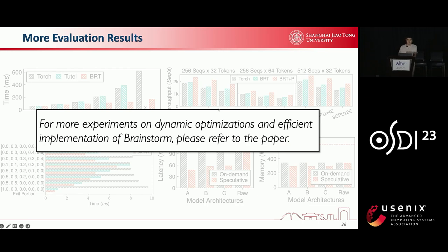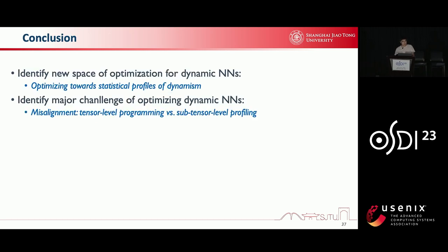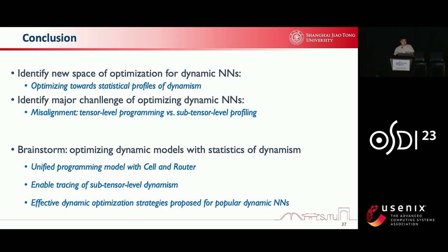For more experiments on dynamic optimization and efficient implementations of Brainstorm, please refer to our paper. In this paper, we identify a new optimization space towards statistical profiles for dynamic models. We also identify that the major challenge for enabling dynamic optimization is the misalignment between tensor-level programming and subtensor-level profiling. With these insights in mind, Brainstorm is proposed for optimizing dynamic models with profiled statistics. Brainstorm first unifies the programming model with cell and router. With these abstractions, Brainstorm enables subtensor-level dynamism tracing. Furthermore, Brainstorm proposes effective optimization strategies.